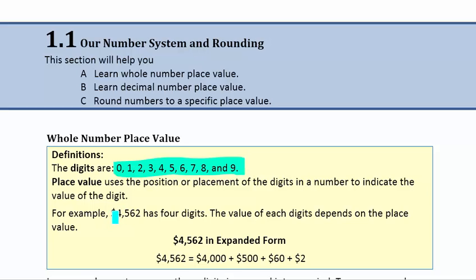For example, if we have this number right here: $4,562. It has four digits, but that represents $4,562 using just those four digits, and the way we do that is by putting it in a specific place value. So if we look at $4,562, that digit 4 doesn't represent 4 — it represents 4,000. The 5 represents 500, 6 represents 60, and 2 represents 2. So we can represent with just those four digits a very large quantity.